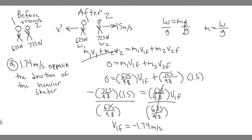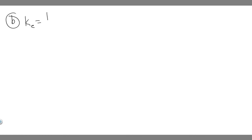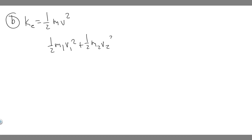Now let's move on to Part B: how much kinetic energy is created during the skater's maneuver? The formula for kinetic energy is KE = ½mv². The kinetic energy at the beginning is zero because the velocity is zero. So we just need to add up the final kinetic energies: ½·M1·V1_final² + ½·M2·V2_final². We know all these numbers now.